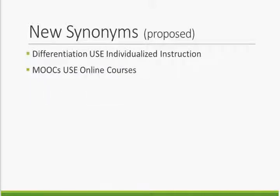The update will also contain nearly 30 new synonyms. Some are being entered as synonyms for new descriptors, and some are being added as synonyms for existing descriptors. Proposed new synonyms include Differentiation, which is a new synonym for individualized instruction, and MOOCs — an abbreviation for Massive Open Online Courses — which will be a synonym for online courses.